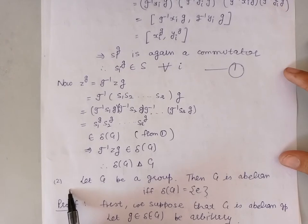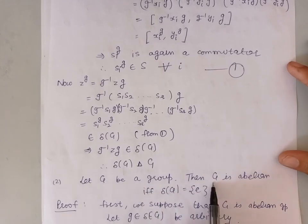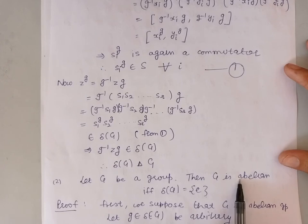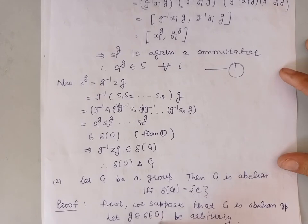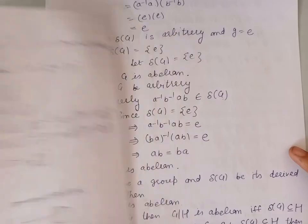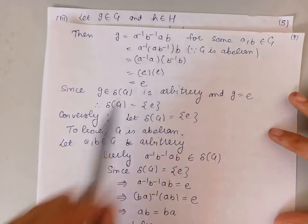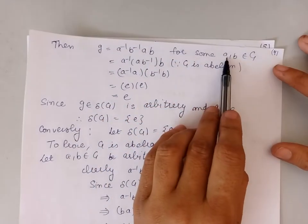Next: a group G is abelian if and only if the commutator subgroup of G is the identity. First, let us take the group to be abelian. An abelian group means every two elements in the group commute with each other. To prove that the commutator subgroup of G is the identity, let us take an arbitrary element g belonging to the commutator subgroup of G. Because g is an element of the derived subgroup, we can write g = A⁻¹B⁻¹AB for some elements A and B belonging to the group G.